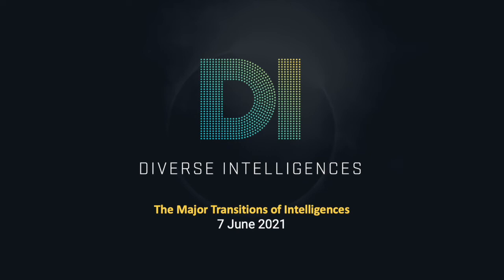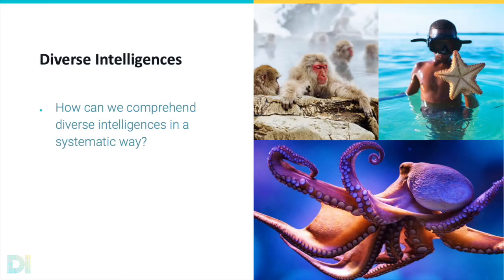As we come to appreciate the wealth and diversity of intelligences on Earth, the challenge becomes how to make sense of this complexity in a systematic way. We argue that one important piece of the puzzle involves treating the evolution of cognition as a series of major evolutionary transitions.